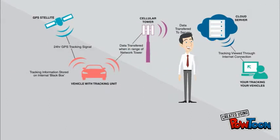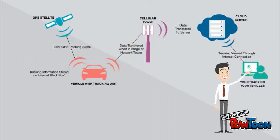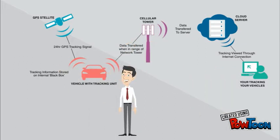From the server, the data can be seen from anywhere in the world through the internet connection, which is provided by the GPRS that is embedded in our device. This is what happens in the backend.